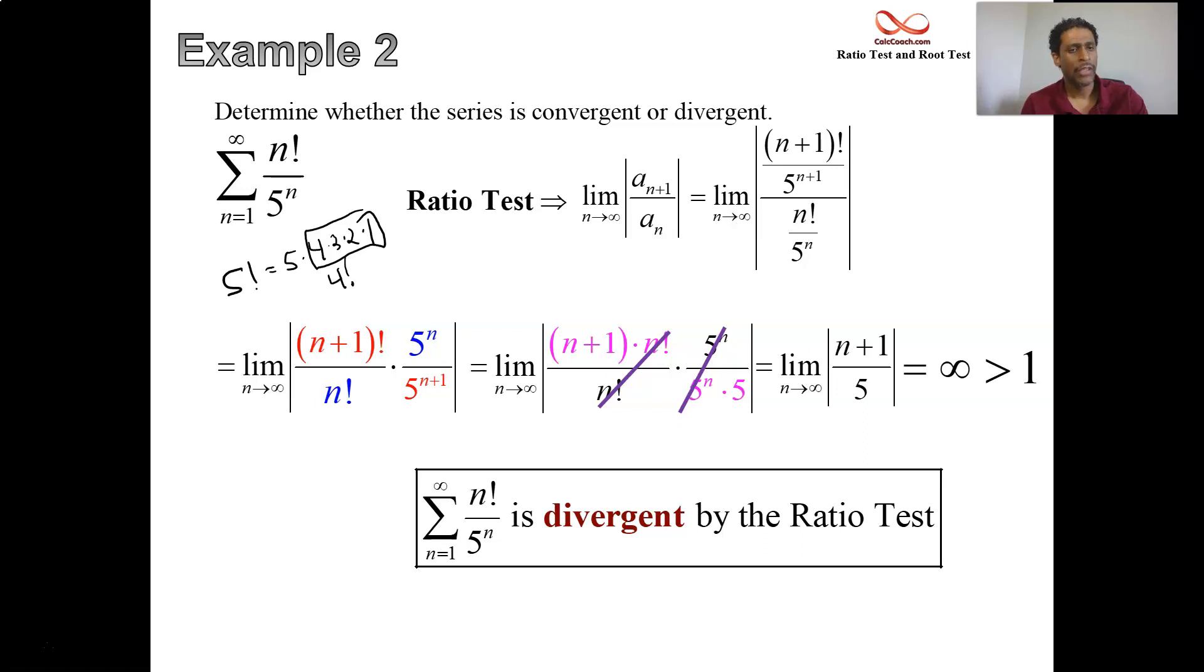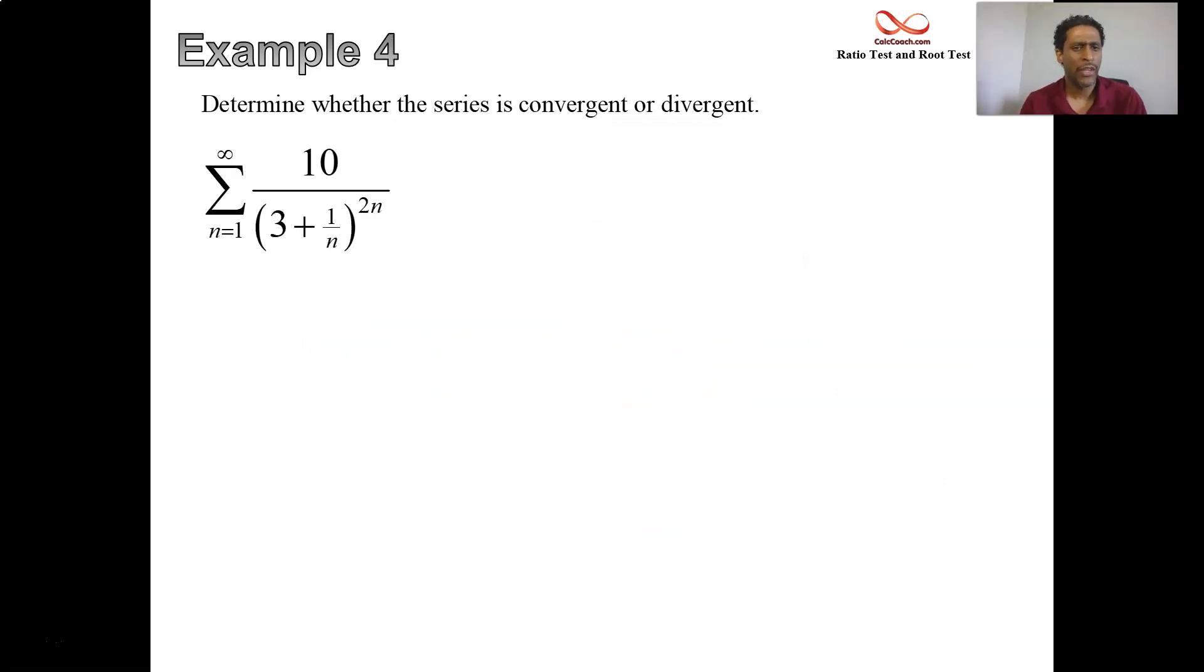That's example two. Now we're going to jump to example four. Example three was done in the previous video. In example four, we have 10 divided by the quantity of three plus one over n and that's raised to the two n. Any time you have a constant without any kind of a mention of an n as a factor, you can pull that constant out. It won't affect whether the series converges or diverges. So pull the 10 out and deal with this series.